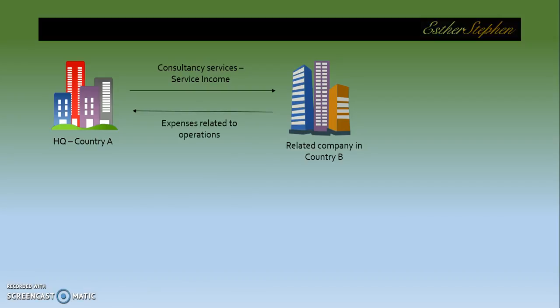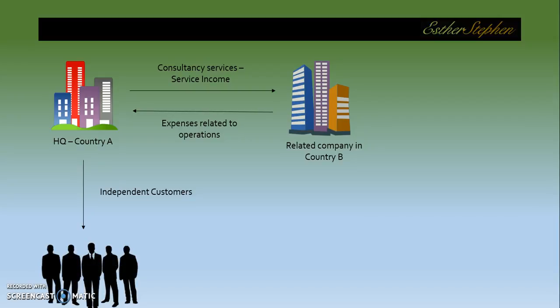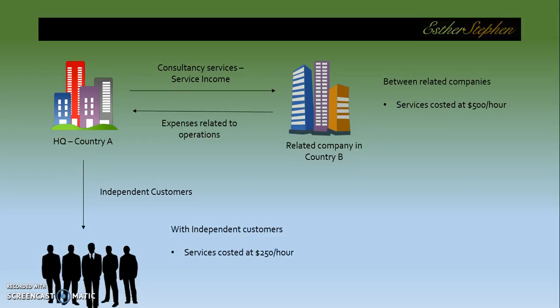As it happens in most cases, A also provides consultancy services to independent outside customers. Between the related companies the service is invoiced at $500 an hour, whereas with independent customers it is costed at $250 an hour. Now clearly there is a possibility that there is a mispricing happening here. Imagine that the headquarters is in a country where corporate taxes are quite low, and the corporate taxes in country B are much higher. So there is every possibility that some amount of income is being transferred out from country B to country A — and this is what transfer pricing deals with.